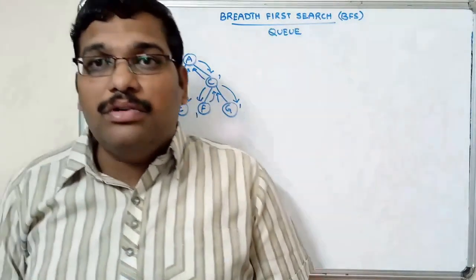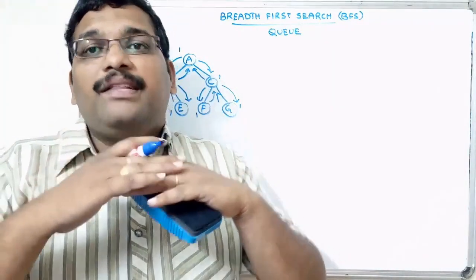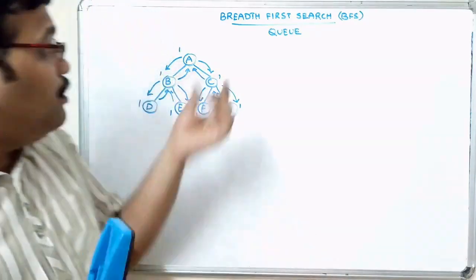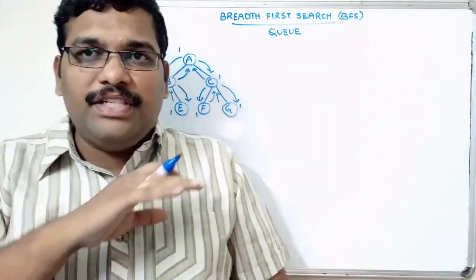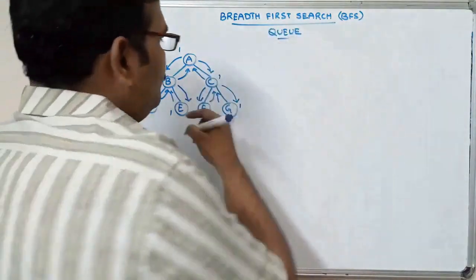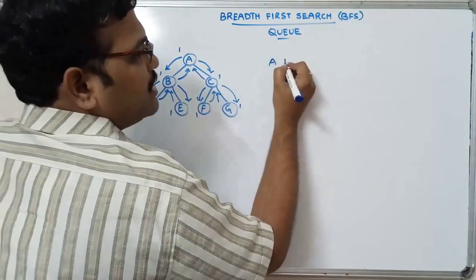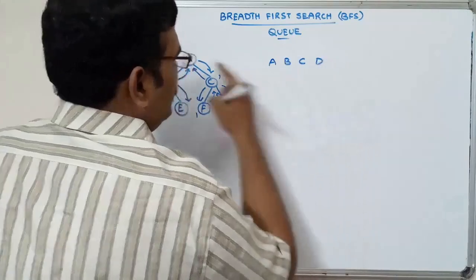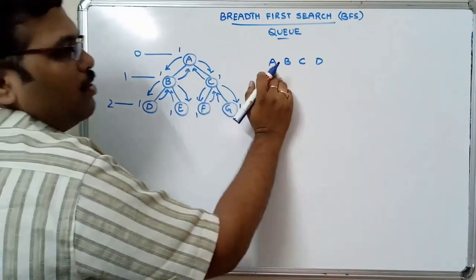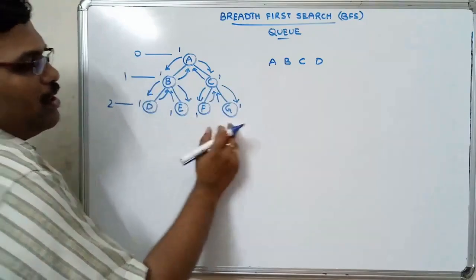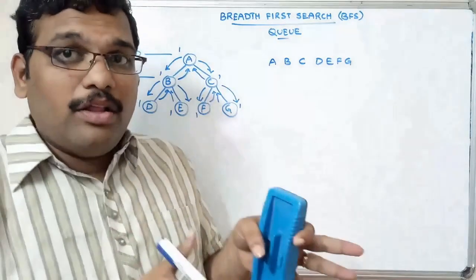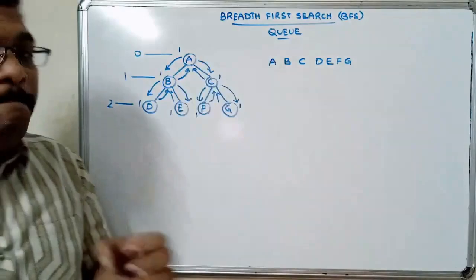Here we have to visit the nodes level-wise. First complete the top level — level 0, then level 1, level 2, level 3. Visit all nodes at the top level, then go to the second level, then the third level. After visiting all these nodes we get the order A, B, C. Level 0: visit node A. Level 1: visit nodes B and C. Level 2: visit nodes D, E, F and G. We visit all nodes level by level — that's why we call it breadth first search.